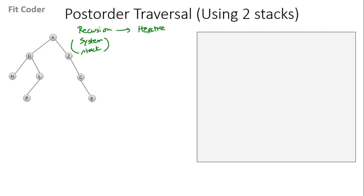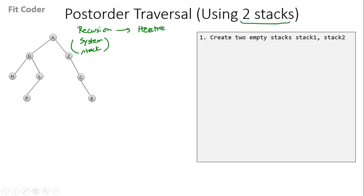There are two methods of doing the post-order traversal — one uses two stacks and the other one uses one stack. In this video, we'll use the two-stacks method. The first step is we need to create two stacks: stack1 and stack2.